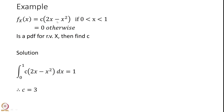Here is a simple example. Suppose the probability density function of a continuous random variable X is f(x) = C times (2x minus x squared) for x between 0 and 1, and 0 otherwise. To find C, we use the property that the integral of the PDF over its complete range must equal 1. Integrating from 0 to 1 and solving, we find that C equals 3.